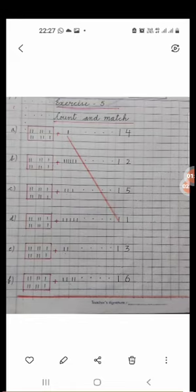Next is one ten and two ones. One ten and two ones means twelve. You have to match with twelve.